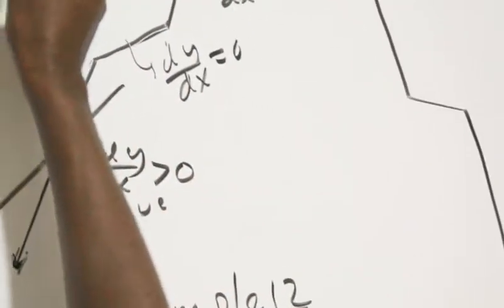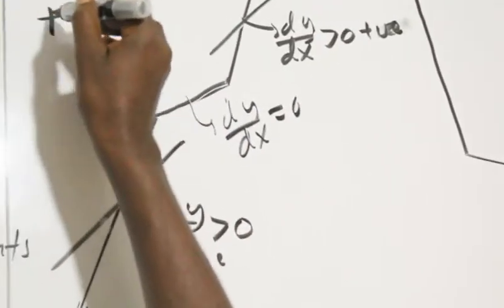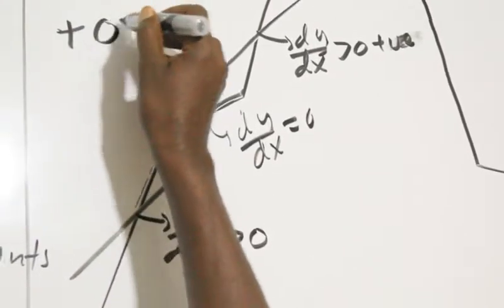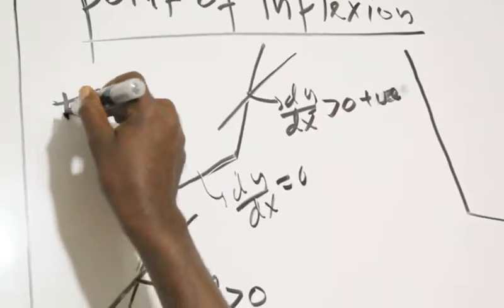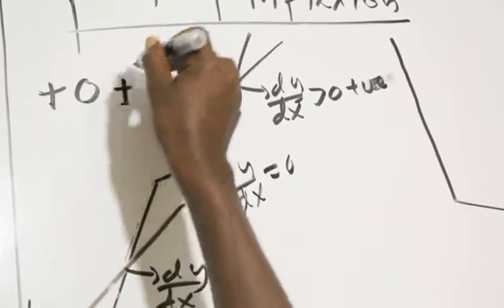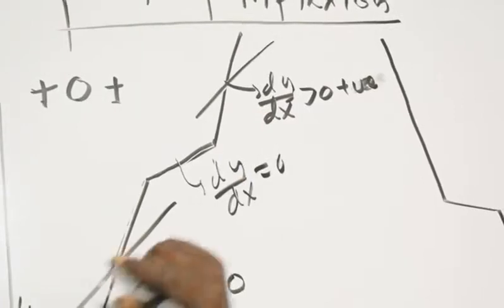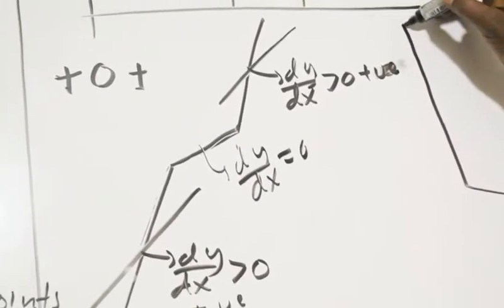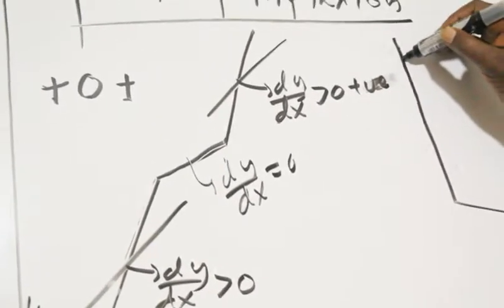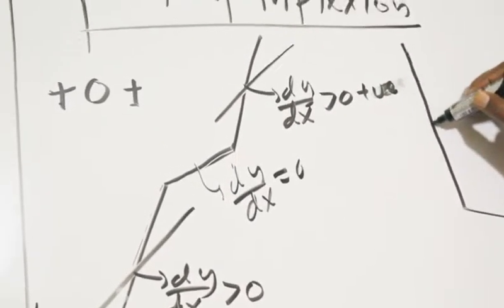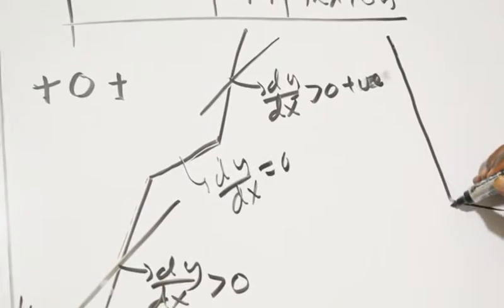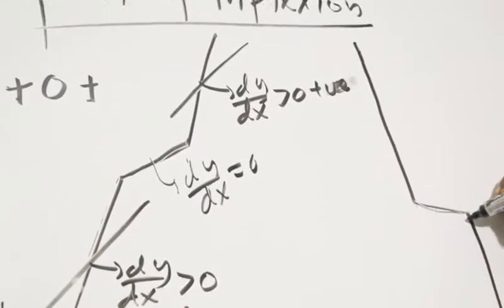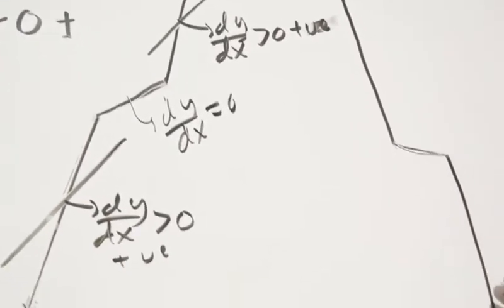When the sign goes from zero to positive to positive, that is an increase. When it goes from positive to zero to zero, that indicates a decrease.